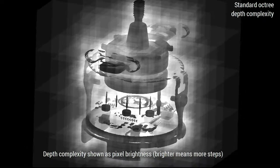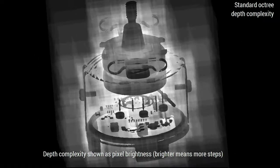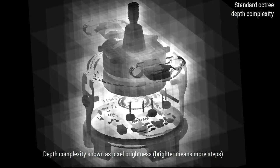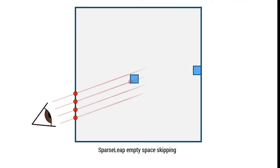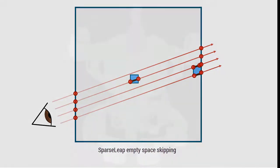We define the depth complexity as the number of accesses per ray to the empty space skipping data structure. SparseLeap reduces the fragmentation of space by computing intersection positions of rays with what we call occupancy geometry.